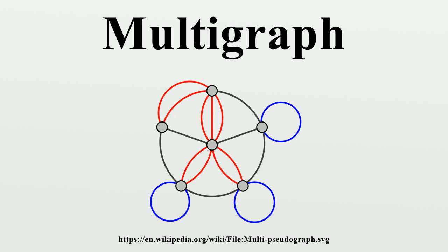This notion might be used to model the possible flight connections offered by an airline. In this case the multigraph would be a directed graph with pairs of directed parallel edges connecting cities to show that it is possible to fly both to and from these locations. In category theory, a small category can be defined as a multigraph equipped with an associative composition law and a distinguished self-loop at each vertex serving as the left and right identity for composition. For this reason, in category theory the term graph is standardly taken to mean multigraph, and the underlying multigraph of a category is called its underlying digraph.